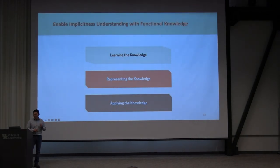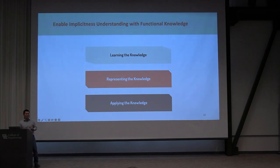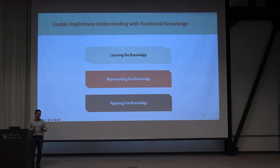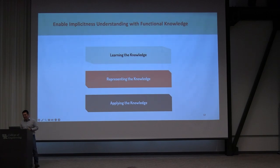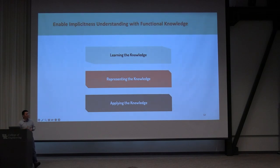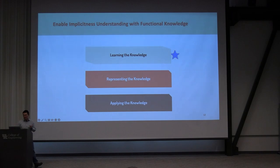Hopefully by now you're convinced that prototypical function is one important type of common-sense knowledge. Now let's see how we can automatically learn this knowledge using computers. I'll introduce two works: one to learn the functions for locations and another for objects.